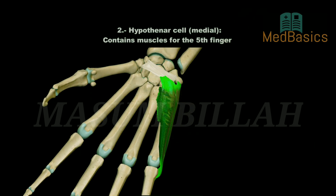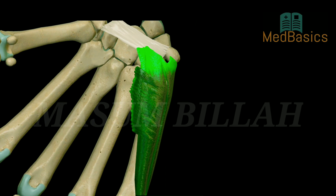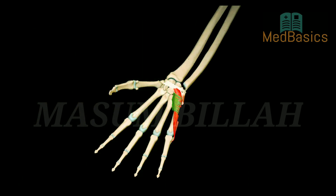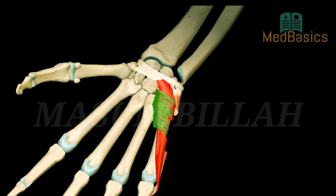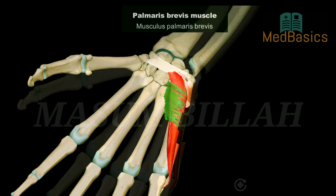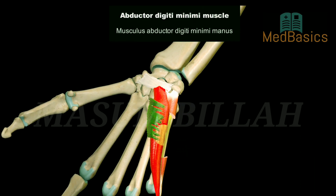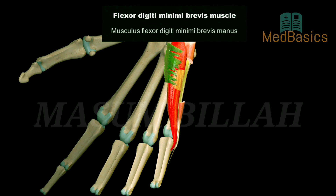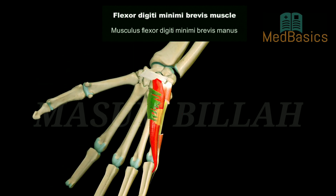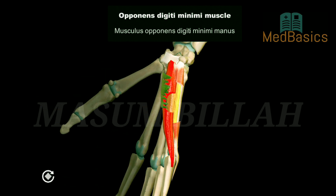Hypothenar compartment. The hypothenar muscles are the four short muscles of the medial palmar compartment of the hand. From superficial to deep, they are: palmaris brevis, abductor digiti minimi, flexor digiti minimi, and opponens digiti minimi.